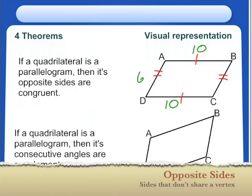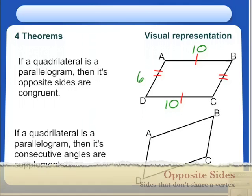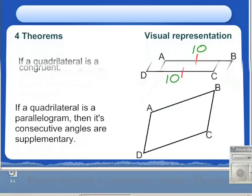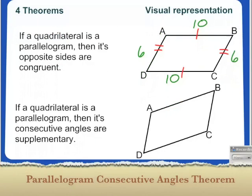If AD is equal to 6 centimeters, BC is also equal to 6 centimeters. Opposite sides congruent. Simple. Our next theorem, if a quadrilateral is a parallelogram, then its consecutive angles are supplementary.